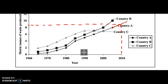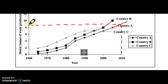Part c asks for the projected waste production for country a in the year 2010. Using a ruler to extend the trend line for country a from 1985 onward, drawing a vertical line at 2010 and reading across, the estimated value is approximately 8.8 to 8.9 metric tons of waste produced.